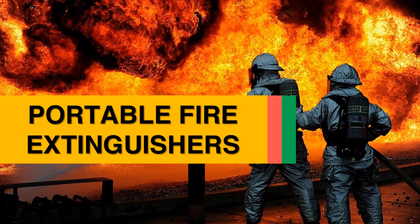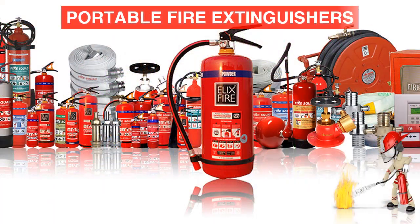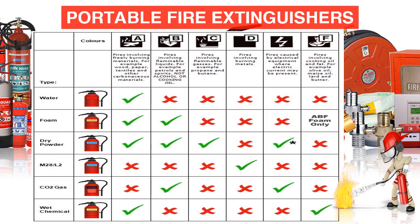The last module is portable fire extinguishers. Portable fire extinguishers are broadly divided into six categories based on application: A for freely burning materials such as wood and paper; B for flammable liquids such as petrol and spirit; C for flammable gases such as propane and butane; D for burning metals; E for electrical fires; and F for cooking oil and fat. Based on the application, different types of extinguishers can be used as represented in the matrix shown on screen.